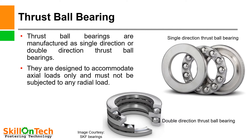A picture of a thrust ball bearing is shown, including single direction and double direction thrust ball bearings. Thrust ball bearings are manufactured as single direction or double direction and are designed to accommodate axial loads only — they must not be subjected to any radial loads. A single direction thrust ball bearing takes thrust load in one direction, while a double direction bearing takes thrust load in both directions. These bearings are generally installed in heavy-duty valves or pumps to take thrust load.